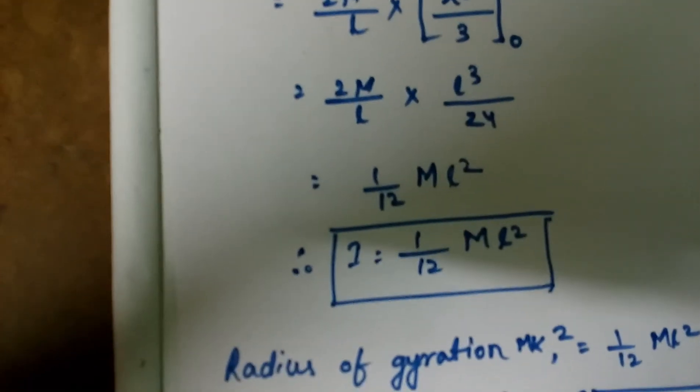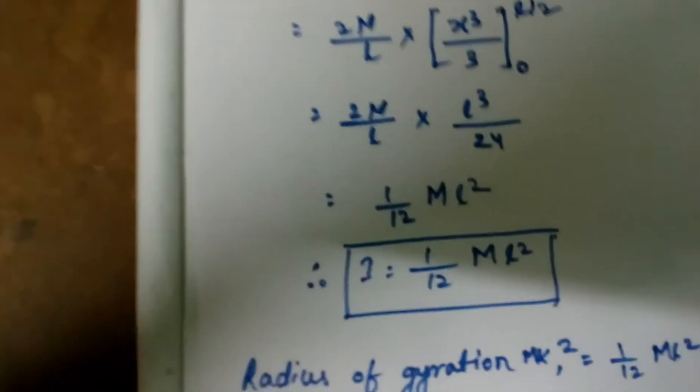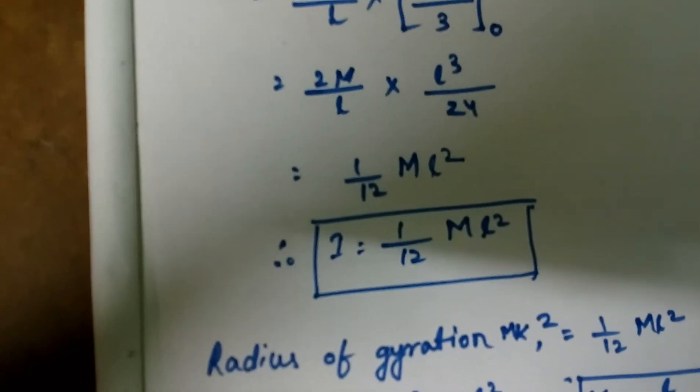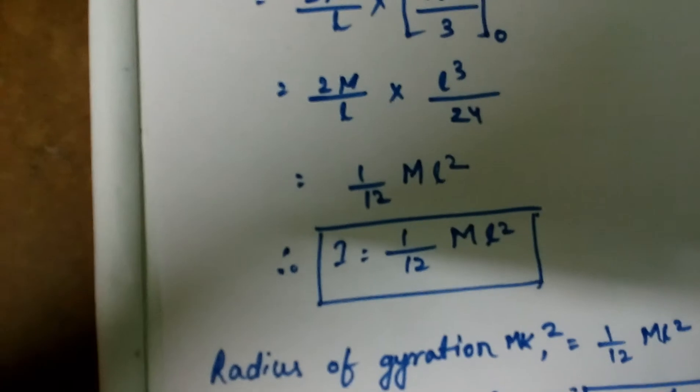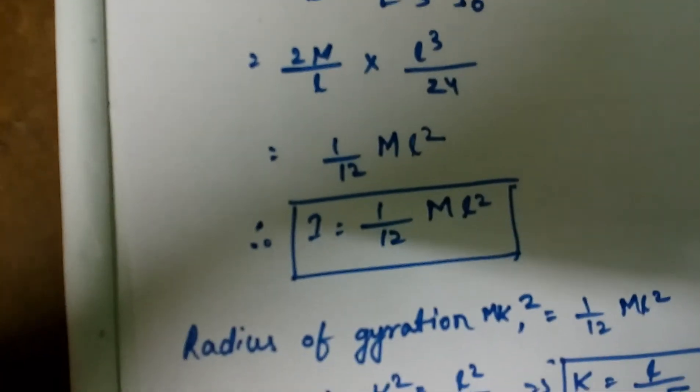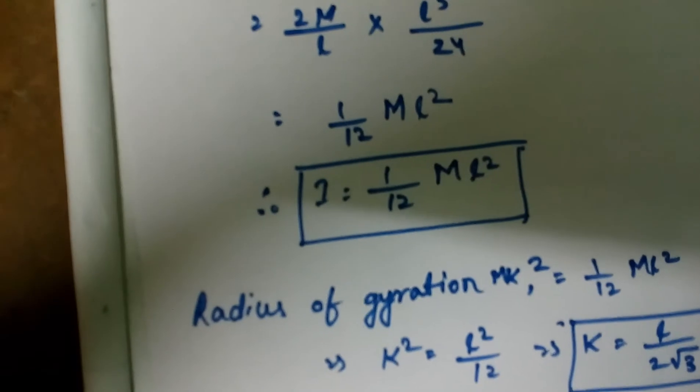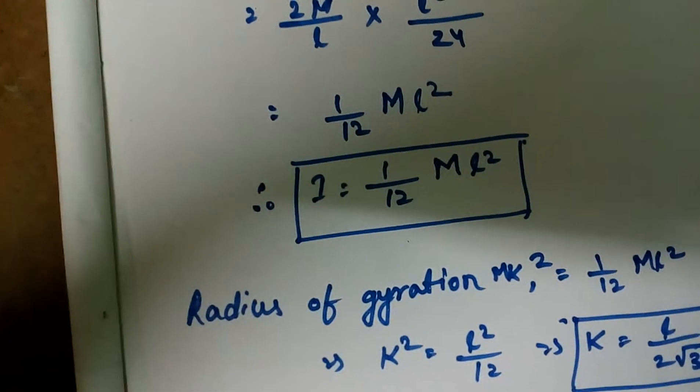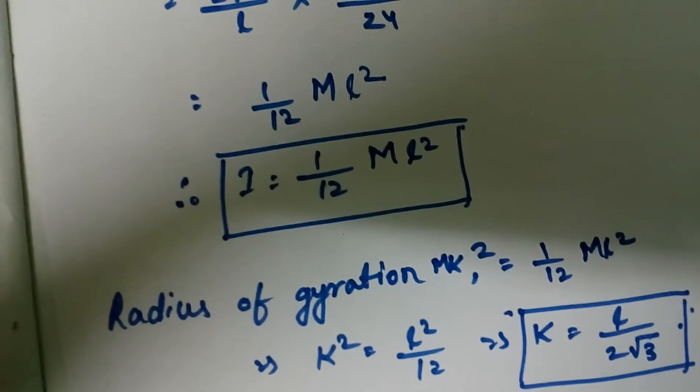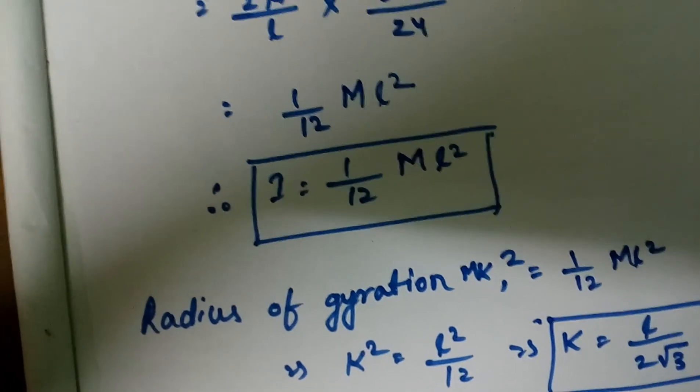Radius of gyration of the rod. What will be the radius of gyration? The formula for radius of gyration is MK squared. So, if we put MK squared equals 1 by 12 ML squared, M will cancel out and K squared equals L squared by 12. So, K equals L by 2 root 3. This is the radius of gyration of the rod.